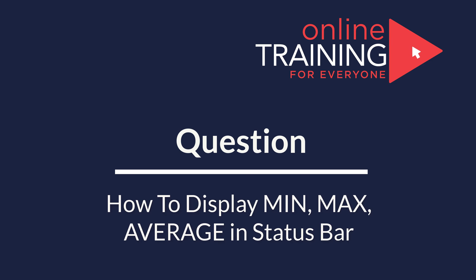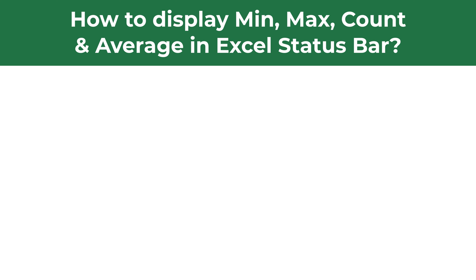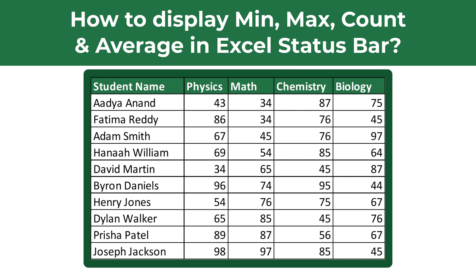Very frequently on the test you get a question about usage of formulas in Excel, and sometimes questions on how to display data in the status bar. For example, how do you display minimum, maximum, count, and average in the Excel status bar? You are presented with a data set of student grades showing student names and their grades in physics, math, chemistry, and biology. Do you know how to add auto calculations for their grades in the status bar?